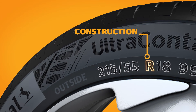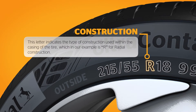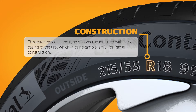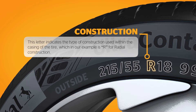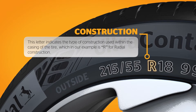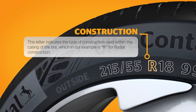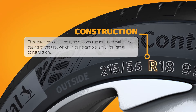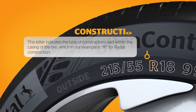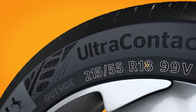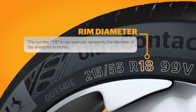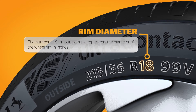This letter indicates the type of construction used within the casing of the tire, which in our example is R for radial construction. Other examples are B for bias ply or D for diagonal construction. The number 18 in our example represents the diameter of the wheel rim in inches.